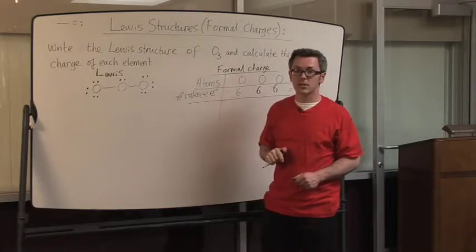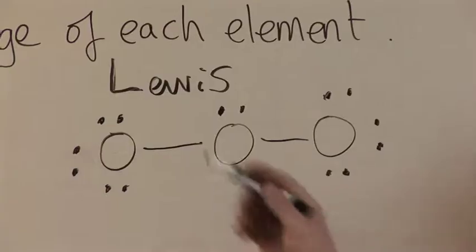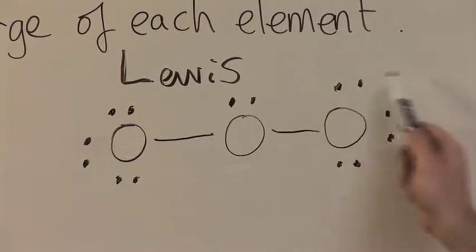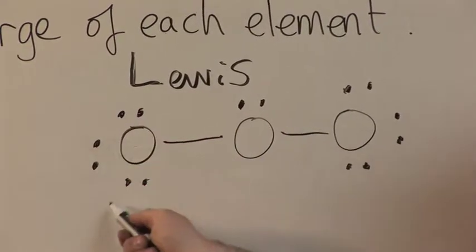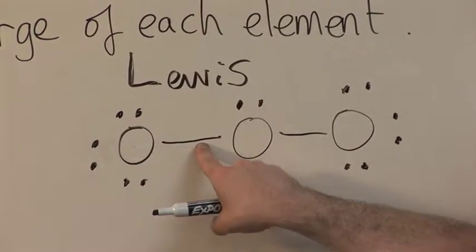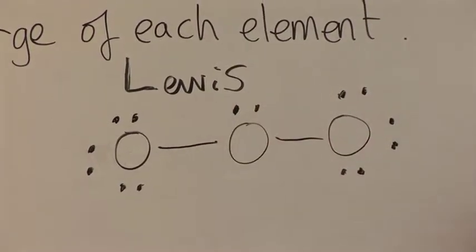Now, we said that because oxygen is a period two element, it wants eight valence electrons. And we can see that the two terminal oxygens do indeed have eight electrons. Two, four, six, plus two, represented by this line, likewise here. However, look at the central oxygen atom.